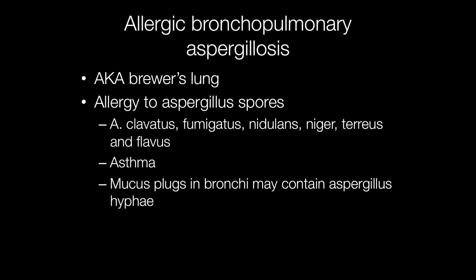Allergic bronchopulmonary aspergillosis (ABPA), also known as Brewer's lung, results from an allergy to Aspergillus spores of species including Aspergillus clavatus, fumigatus, nigelans, niger, terreus, and flavus. This results in asthma with mucus plugs in the bronchi that may contain Aspergillus hyphae.